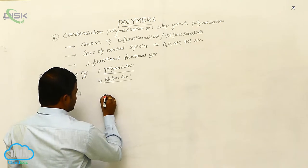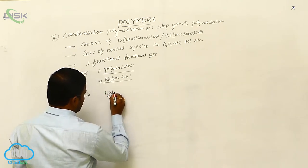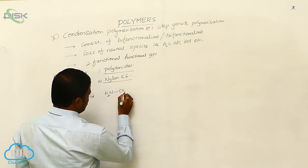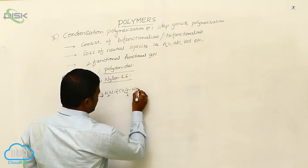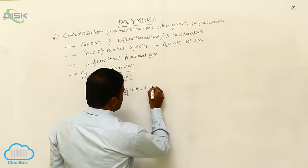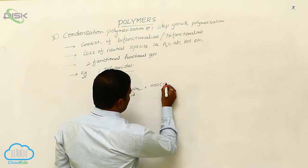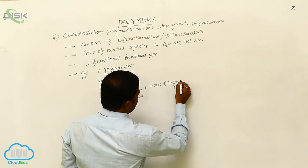Nylon 6-6 is produced from (CH2)6(NH2)2. What is this? Hexamethylene diamine when it reacts with adipic acid (CH2)4(COOH)2.